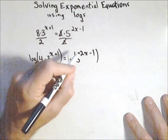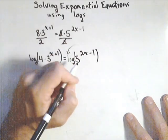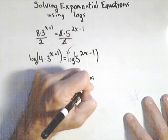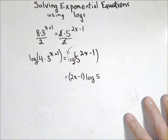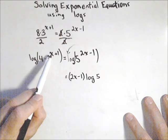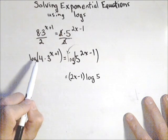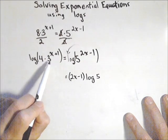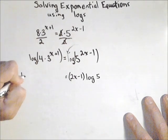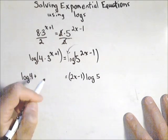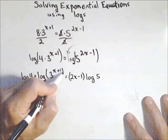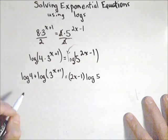Now, on the right-hand side, we're going to use that property of logs that allows us to pull that exponent out front, so I'm going to pull the two x minus one out front times log of five. Now, here's where it gets, you've got to be a little careful. I can't do that yet on the left-hand side because four is not being raised to the x plus one. What I can do is I have multiplication. I can use my product to sum property of logarithms. So I can rewrite this as log of four plus log of three raised to the x plus one because now I can pull that exponent out front.